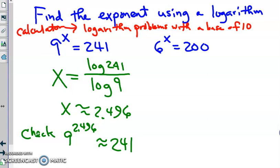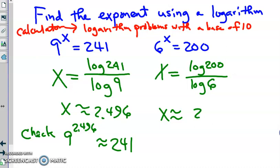So again, x is going to be log of the answer, which is 200, divided by the log of the base, which is 6. So log of 200 divided by the log of, by the base, which is 6. And the answer comes out to be approximately 2.957. So 6 to the exponent 2.957 should give me an answer that's very close to 200.